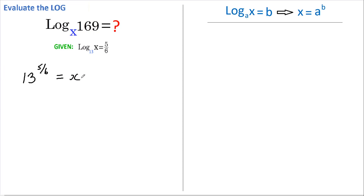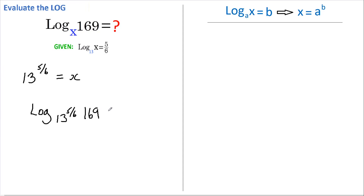We can now take the expression that we wish to evaluate and substitute this value in for x. So we get log base 13 and 5 sixths of 169 equals — and just to be different, I'll call this P.